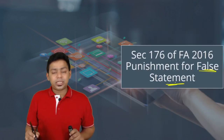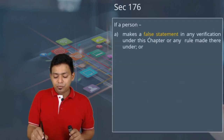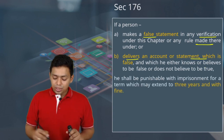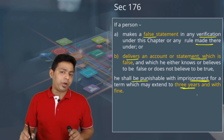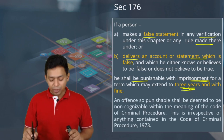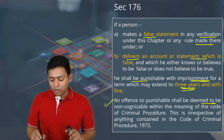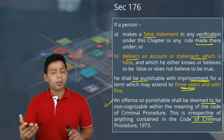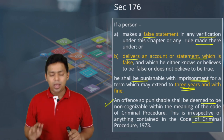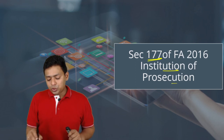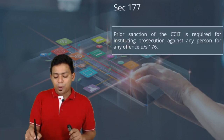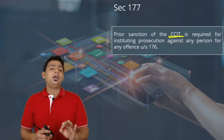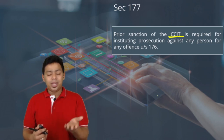Punishment for false statements means imprisonment. If a person makes a false statement in a verification under this chapter, or delivers an account or statement which is false, he shall be punishable with imprisonment for a term which may extend to 3 years with a fine. This offense shall be deemed non-cognizable within the meaning of the Code of Criminal Procedure. Prosecution cannot be initiated without taking approval from the CCIT — Chief Commissioner of Income Tax.